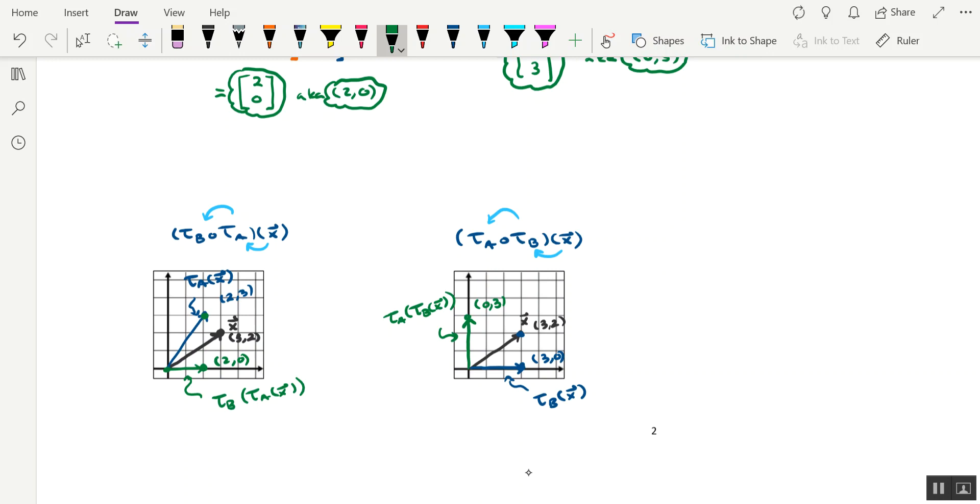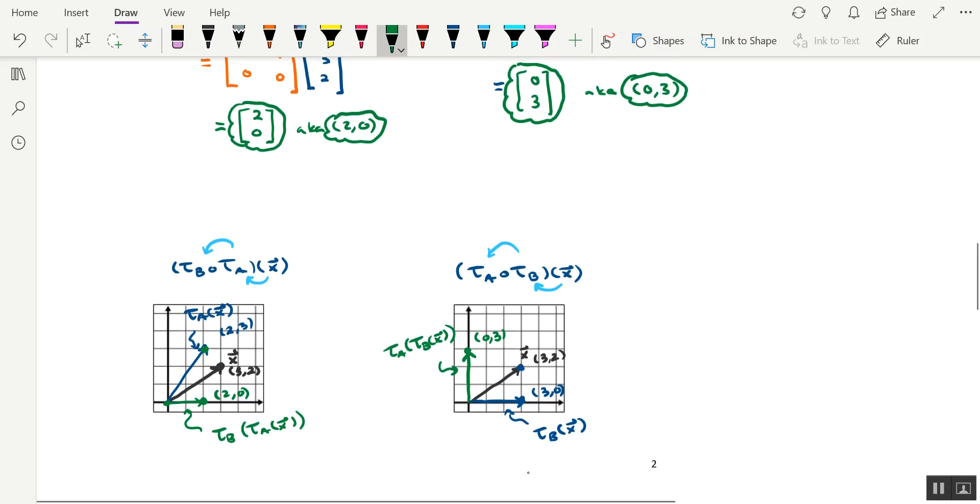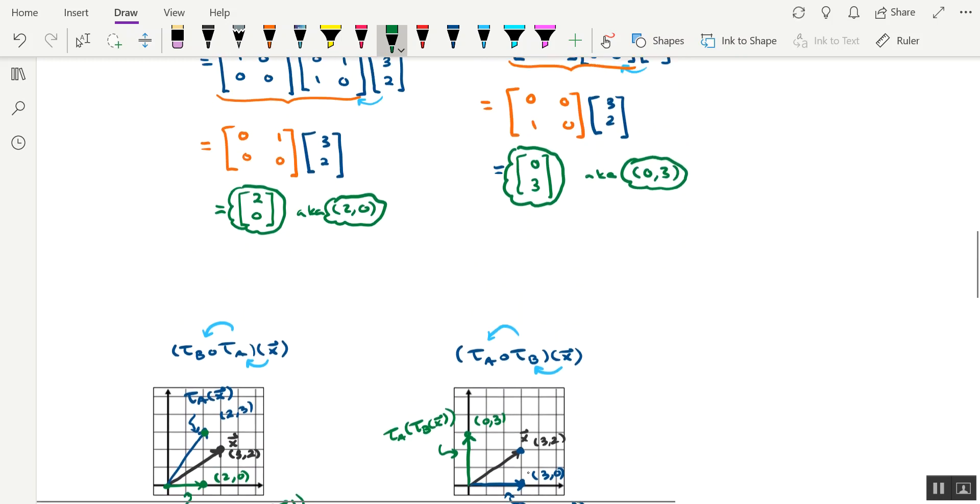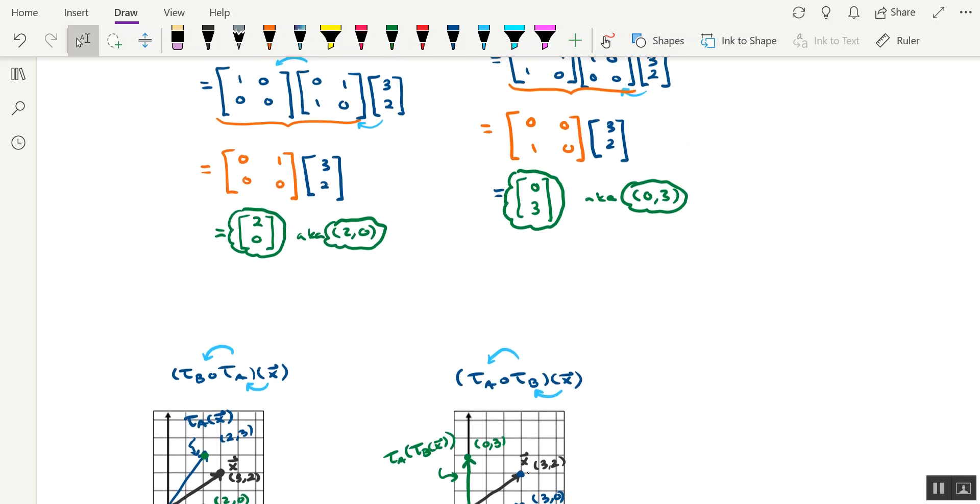This is visual evidence that the matrix compositions do not commute. If they did, then we should end up with the same vector in each diagram, but we don't. And you may have even caught that fact earlier in the problem that the matrix transformations, the composition of them, doesn't commute.